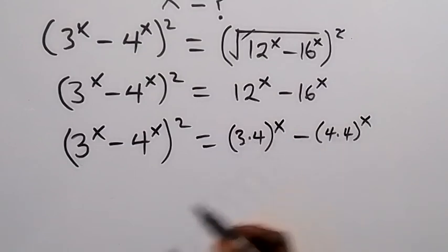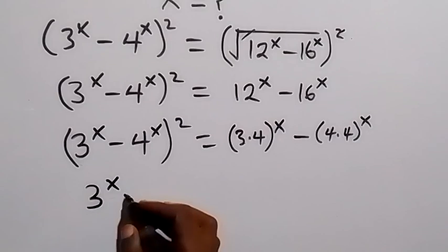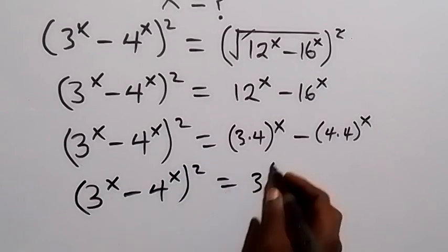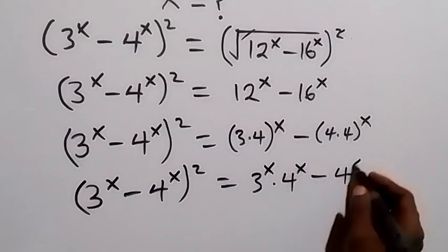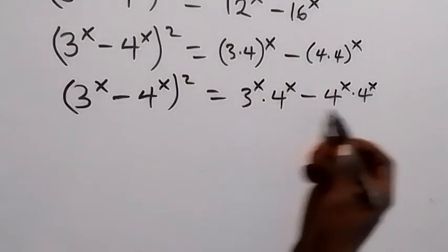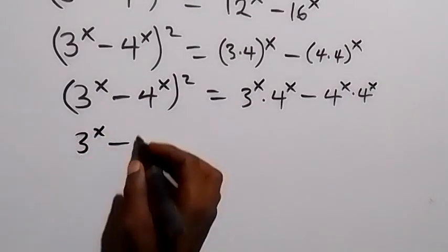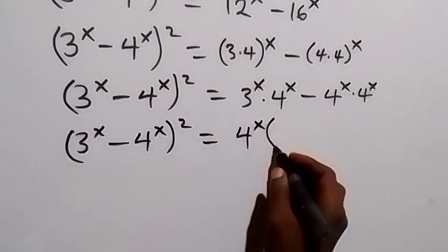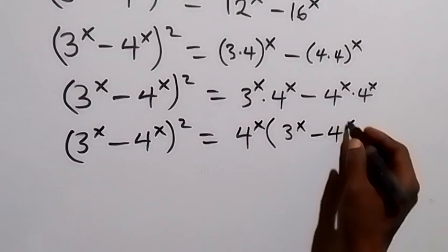We can write this again as 3^x minus 4^x all squared, equals 3^x times 4^x minus 4^x times 4^x. On the right side, we can factor out 4^x, leaving 3^x minus 4^x.